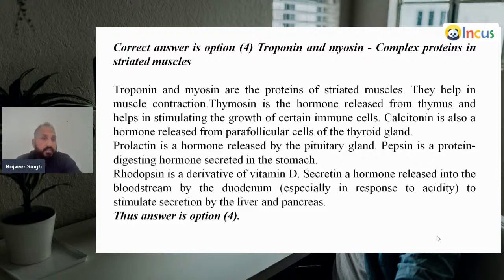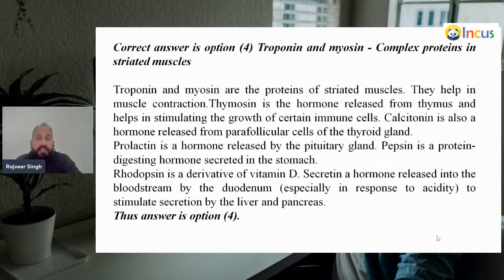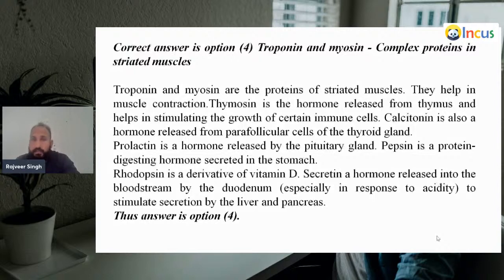Thymosin is the hormone released from the thymus and helps in stimulating the growth of certain immune cells. Calcitonin is also a hormone released from the parafollicular cells of the thyroid gland. Prolactin is a hormone released by the pituitary gland. Pepsin is a protein-digesting enzyme secreted in the stomach. Rhodopsin is a derivative of vitamin A. Secretin is a hormone released into the bloodstream by the duodenum, especially in response to acidity, to stimulate secretion by the liver and pancreas.